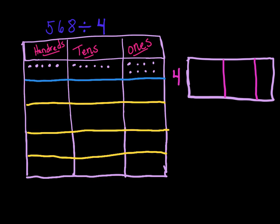We're noticing that one of those hundreds is not going to fit, so we distribute 4 of them into the 4 rows. We used up those 4, and now we have to give that extra one to the tens column. That gives us 16 tens total, and 16 is divisible by 4.